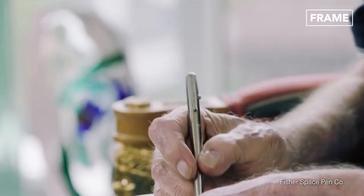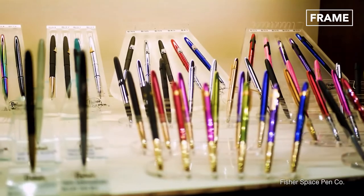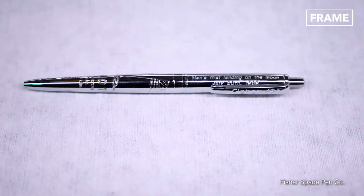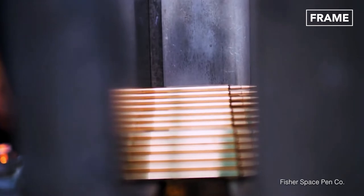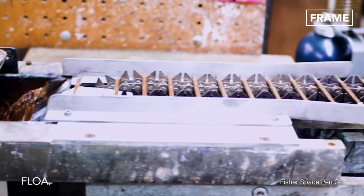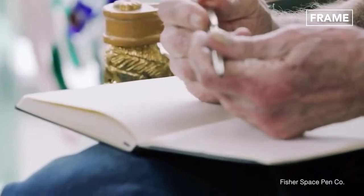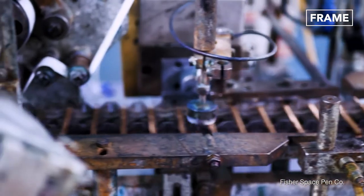The production process of space pens is quite an intriguing one. In order to push the ink toward the writing point, a white plastic ball known as the float is inserted into the pen's refill, which is an empty brass tube. The writing tip is attached after a machine has pumped ink into the tube.